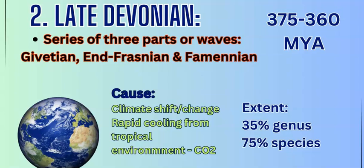It took about 70 million years for Earth's species to recover, and then came the second mass extinction: the late Devonian, which happened between 375 and 360 million years ago — a 15-million-year period which saw different waves of extinction occur in three distinct phases. This was caused by a climate shift from tropical to cooling, driven by the removal of CO2 by vegetation and flora, and caused an extinction that took out 35% of the genus and 75% of the species.